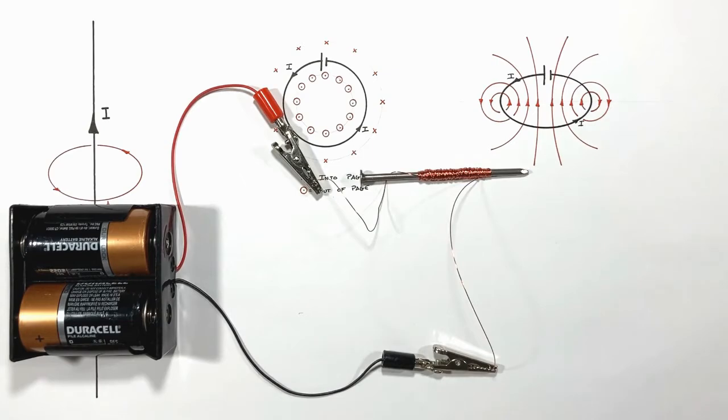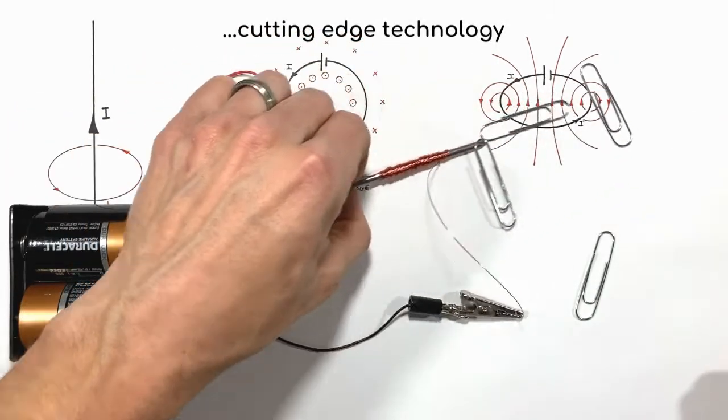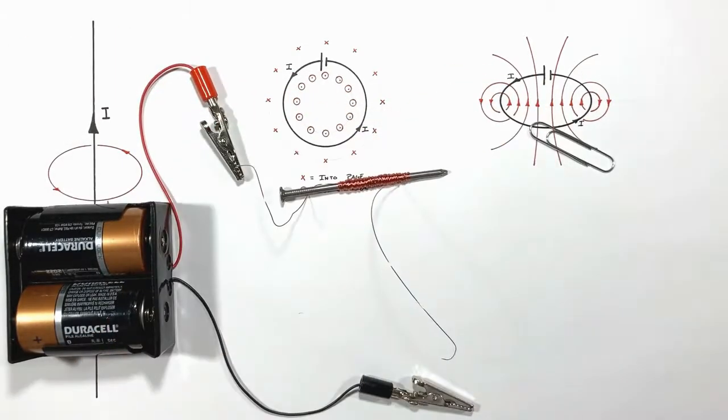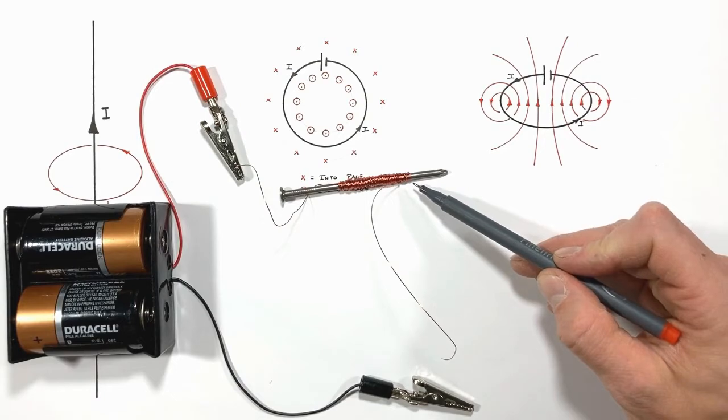It could do something like pick up paper clips. We call a coiled-up loop of current-carrying wire like this a solenoid.